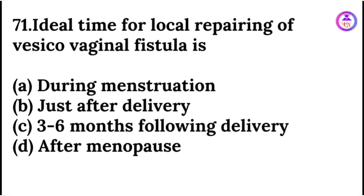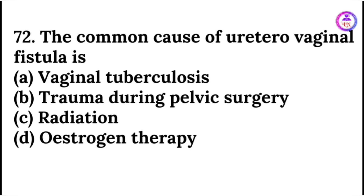The ideal time for local repairing of vesicovaginal fistula is 3 to 6 months following delivery. The most common cause of uterovaginal fistula is trauma during pelvic surgeries.